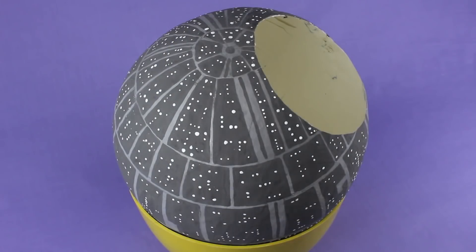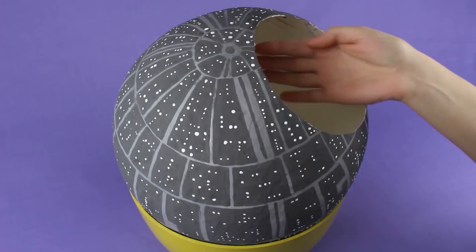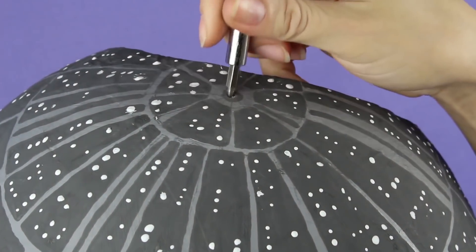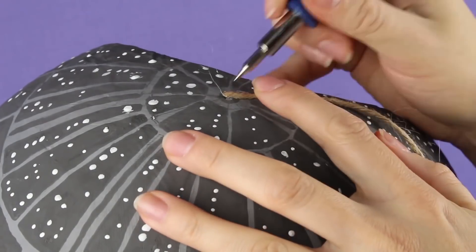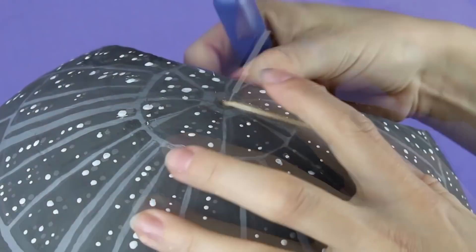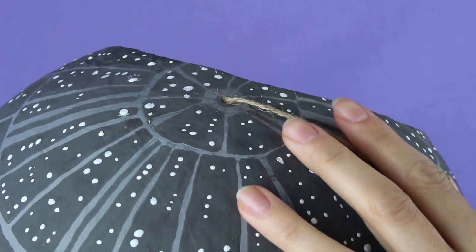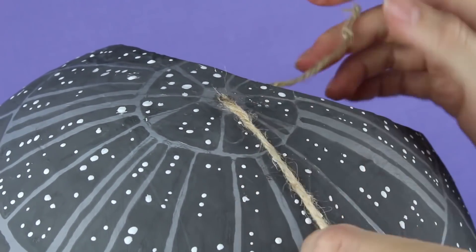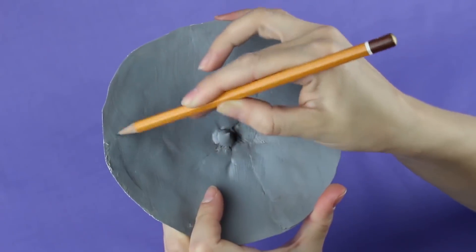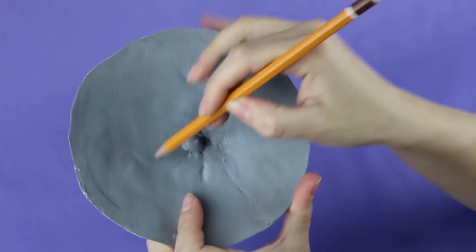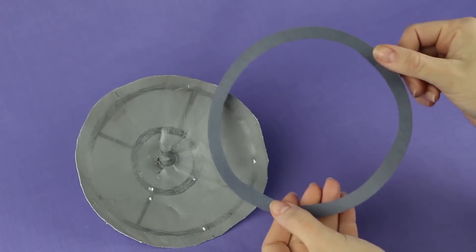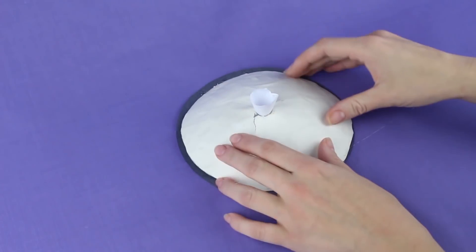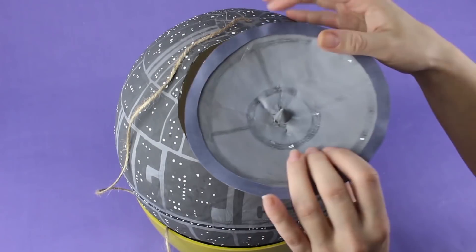It's time to put sweets inside. Make a hole in the top part to hang the pinata. Put a string inside in this way. Tie a knot. Finish making details inside the sphere. Cut out a paper ring. Add some glue with a glue gun. Attach the ring onto the cut detail. Now attach the element on the Death Star.